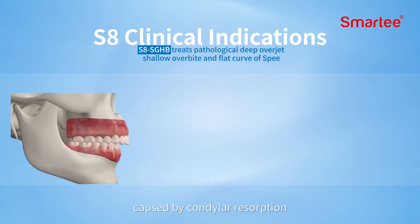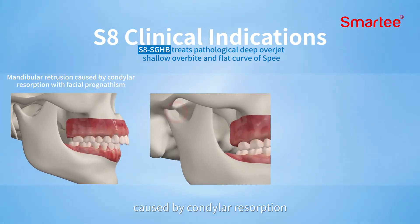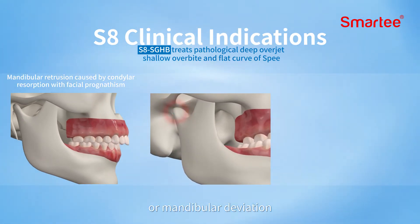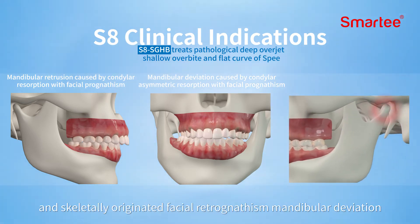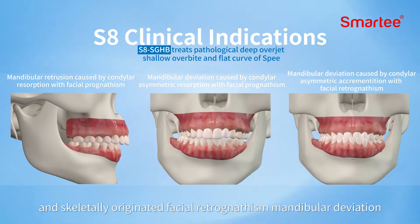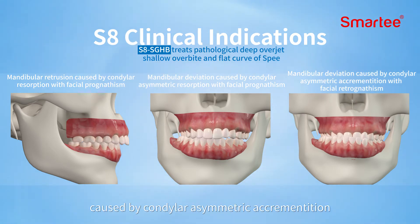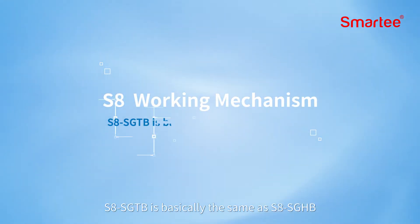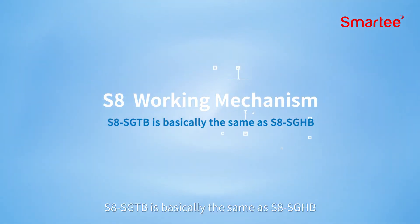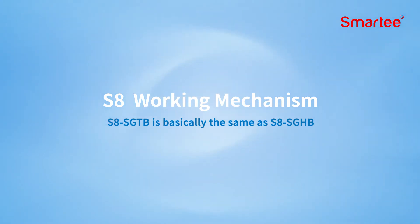S8 SGHP is mainly used to treat joint-originated malocclusion, including skeletally originated facial prognathism with mandibular retrusion caused by condylar resorption, or mandibular deviation caused by condylar asymmetric resorption, and skeletally originated facial retrognathism or mandibular deviation caused by condylar asymmetric accrementation.